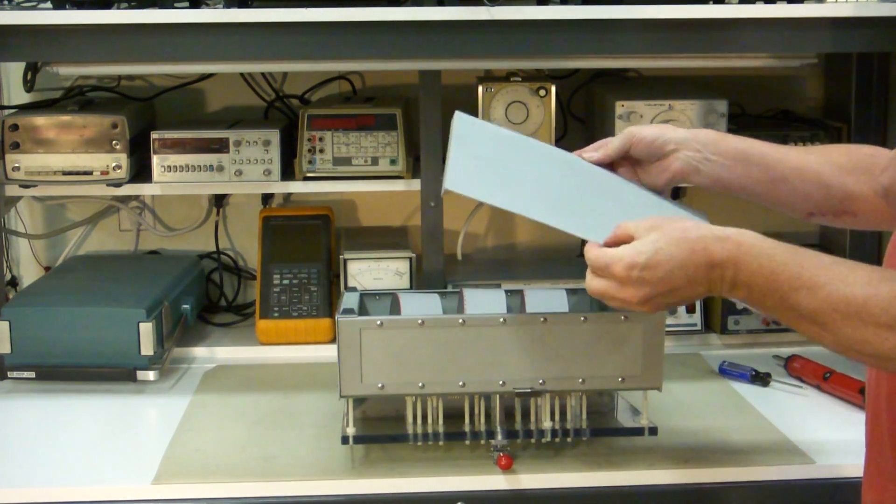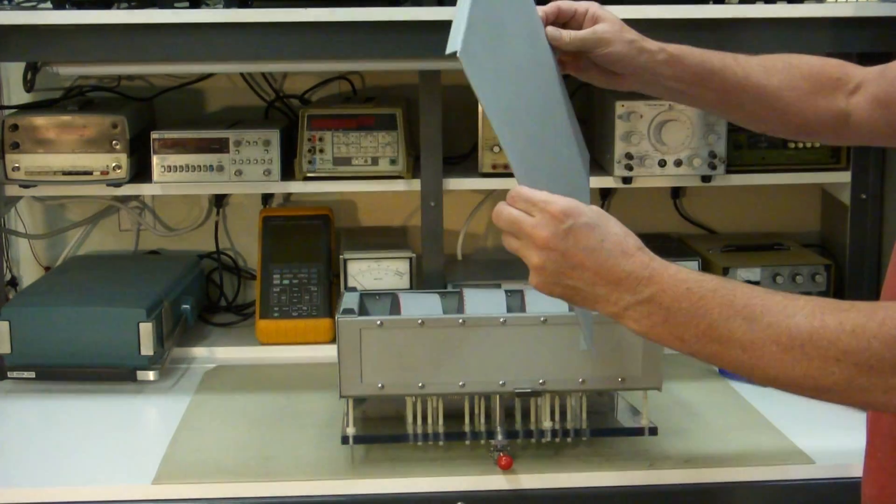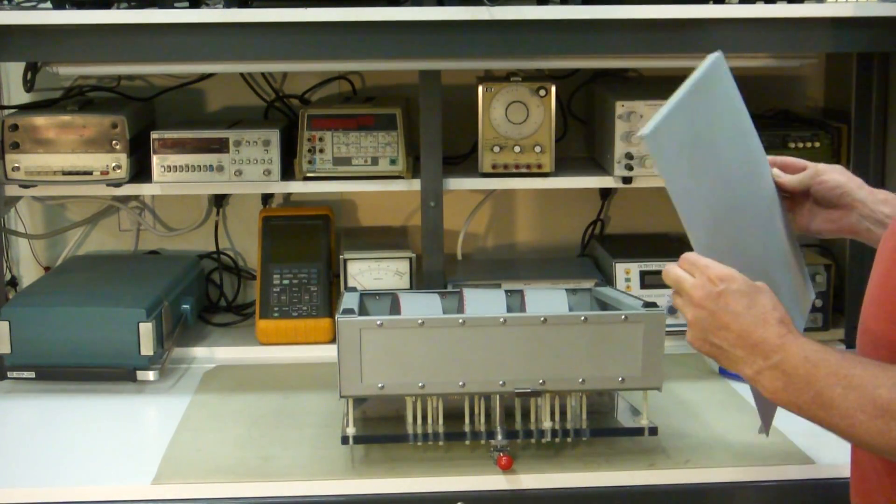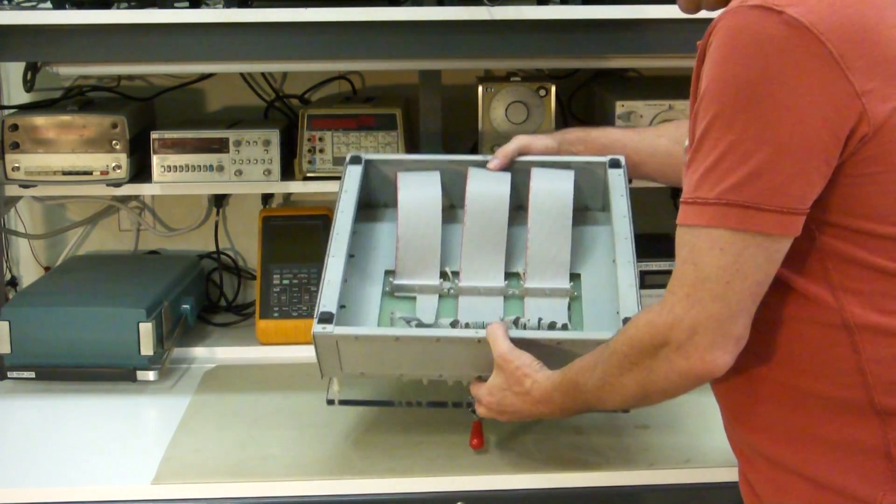Now you shouldn't mount anything in this bottom cover, it's just a protective cover, it's pretty but it's thin, it's not really made for mounting. Everything should be mounted inside the fixture in this area.